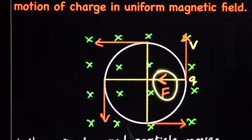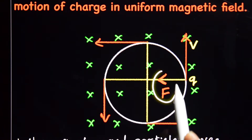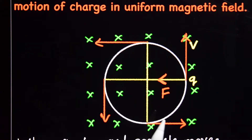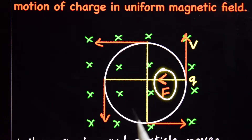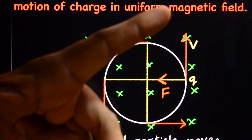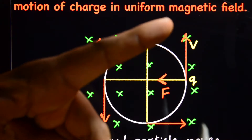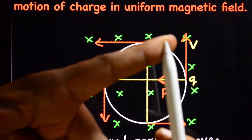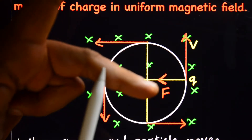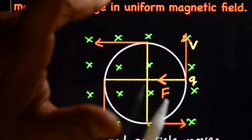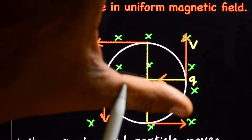At the point of motion, the centripetal force is provided by the magnetic force. Using the left-hand rule: the index finger shows the direction of the magnetic field, the middle finger shows the direction of the charged particle or current, and the thumb shows the direction of force.